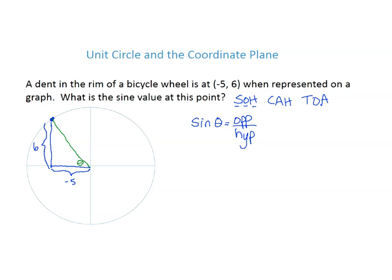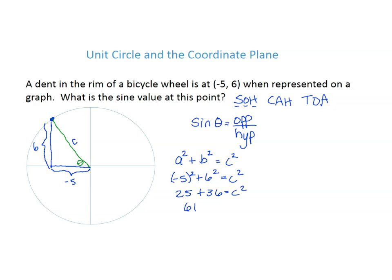To find it, I'm going to use the Pythagorean theorem, and I'll label my hypotenuse C. Pythagorean theorem says that if you square one leg and add it to the other leg squared, it equals the hypotenuse squared. I have an x-coordinate of negative 5 and a y-value of 6. So I'd have negative 5 squared plus 6 squared equals c squared, which is 25 plus 36 equals c squared, giving us 61 equals c squared.